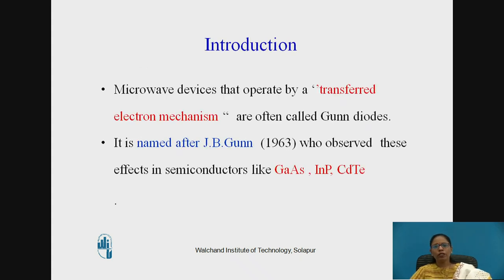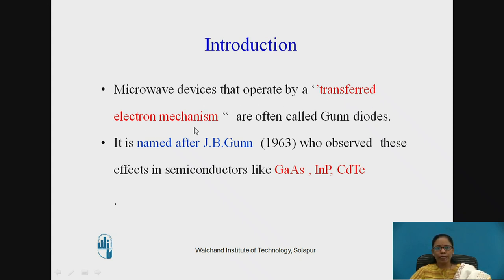Let us look at what is a Gunn Diode. A Gunn Diode is a microwave device — a microwave oscillator which operates on the principle of the transfer electron mechanism. It was invented by J.B. Gunn, and is named after him as Gunn Diode.